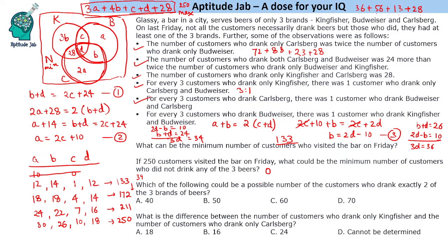The next question asks which value could be a possible number of customers who drank exactly two of the three brands. Exactly two brands is B + C + 28. In the first case, B + C = 15, giving 15 + 28 = 43. In the second case, B + C = 22, giving 22 + 28 = 50. Since 50 appears as one of the options, that is the answer.